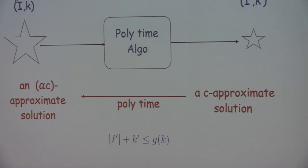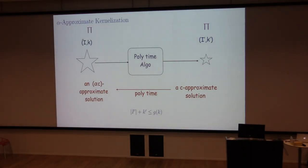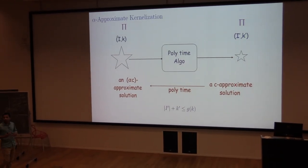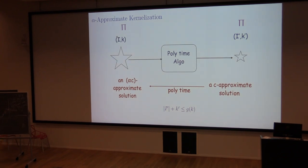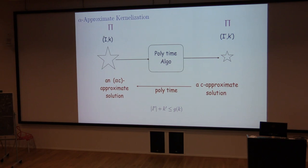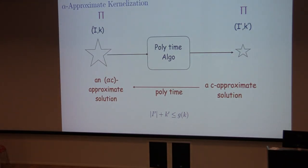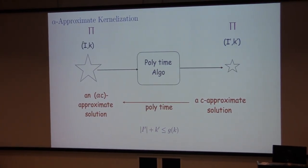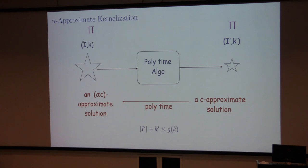Let's formalize the definition of lossy kernelization, or alpha-approximate kernelization. A problem pi has an alpha-approximate kernelization if there is a polynomial time algorithm which reduces its size such that the reduced instance has size bounded by some function of k, and whenever somebody comes with a c-approximate solution to the reduced instance, you can pull back an alpha-c-approximate solution of the original instance in polynomial time — giving you an alpha-approximate kernel.